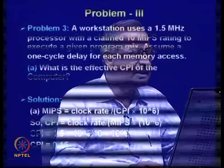A CPI of 0.15 means it is a superscalar processor. Since it is superscalar, you get a CPI less than 1. For superscalar processors, instead of stating CPI, it is more appropriate to state IPC (instructions per cycle), which will be greater than 1.